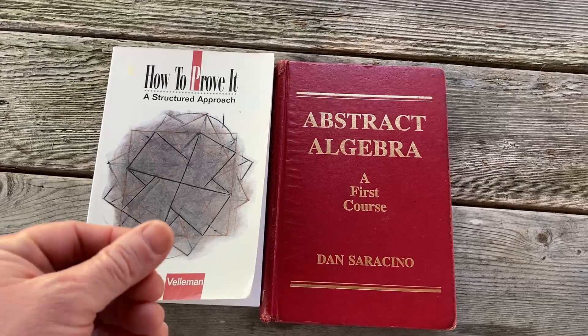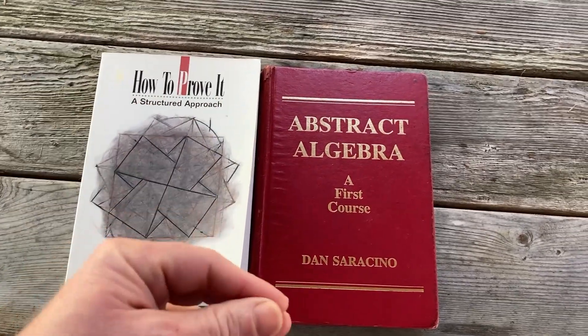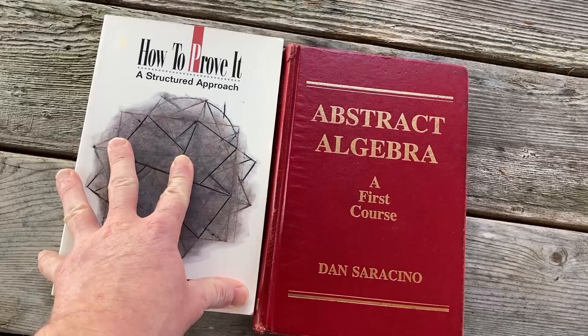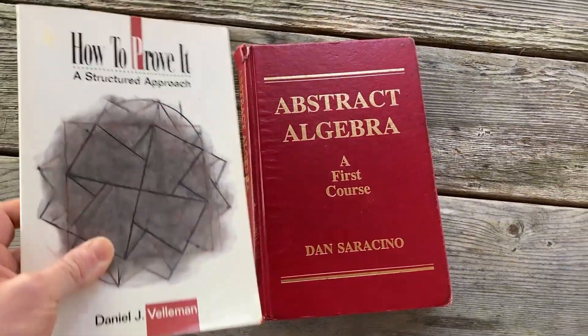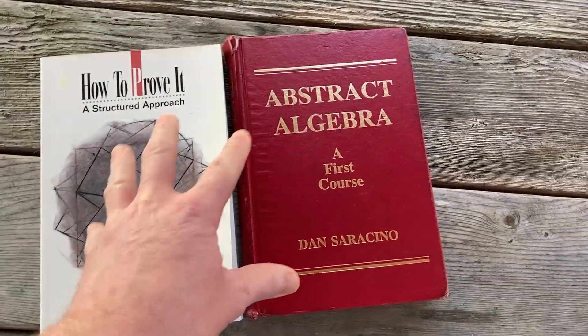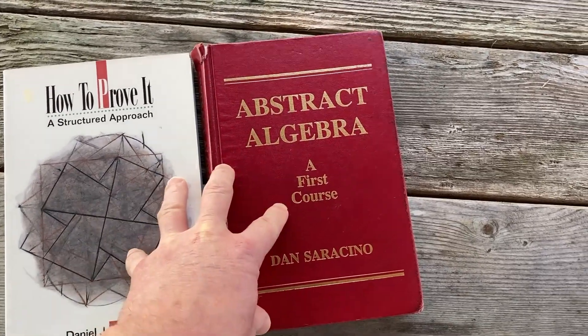When you swim with the sharks, you're either going to learn to swim really fast or you'll get out of the water. And if you do, you can just fall back on this book and focus on the proof writing. But ideally, you do need both in order to learn abstract algebra.